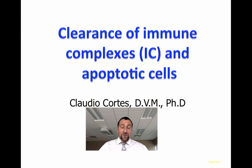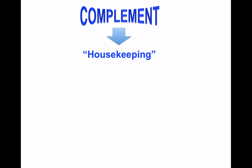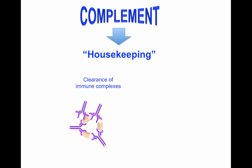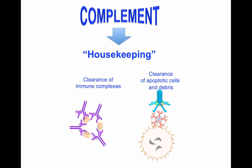Hello, everyone. My name is Claudio Cortes, and this video is about clearance of immune complexes and apoptotic cells. The complement system plays a fundamental role in keeping the host safe from certain products that are normally produced in our body. Basically, the complement system plays a housekeeping role. The complement system facilitates the removal and clearance of immune complexes and apoptotic cells that are constantly produced in our body.